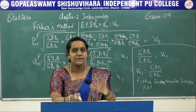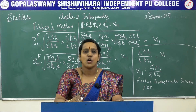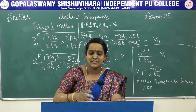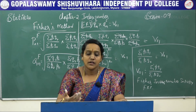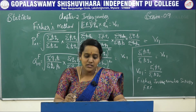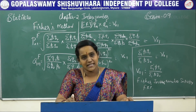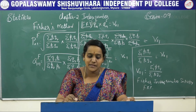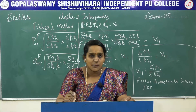Only Fisher's index number satisfies both the Time Reversal Test (TRT) and the Factor Reversal Test (FRT), which is why it is called the Ideal Index Number. The next test is the circular test, which is similar to the time reversal test but allows more than two periods. The circular test is satisfied only by the simple geometric mean of price relatives and Kelly's fixed weight method.